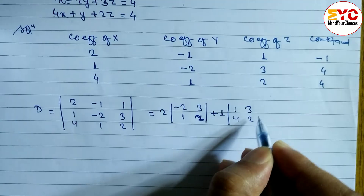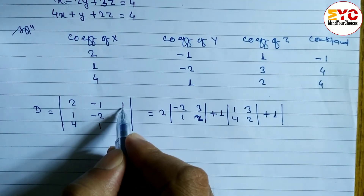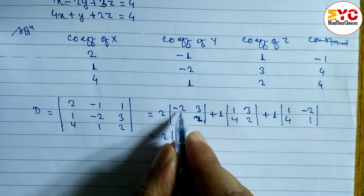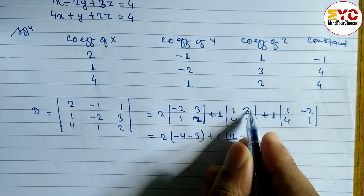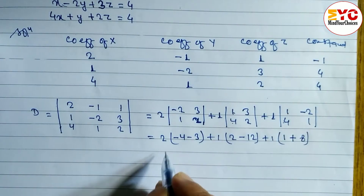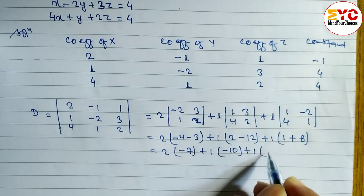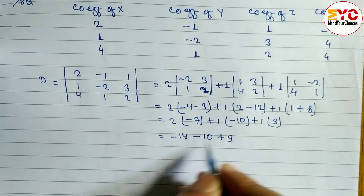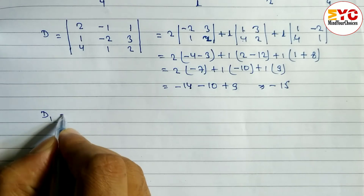Then plus 1 and the minor of that 1 is 1, minus 2, 4, 1. Now calculating: 2 times (minus 2 times 2 minus 3 times 1) = 2 times (minus 4 minus 3) = minus 14. Plus 1 times (1 times 2 minus 3 times 4) = minus 10. Plus 1 times (1 times 1 minus minus 2 times 4) = 9. So D = minus 14 minus 10 plus 9 = minus 15.